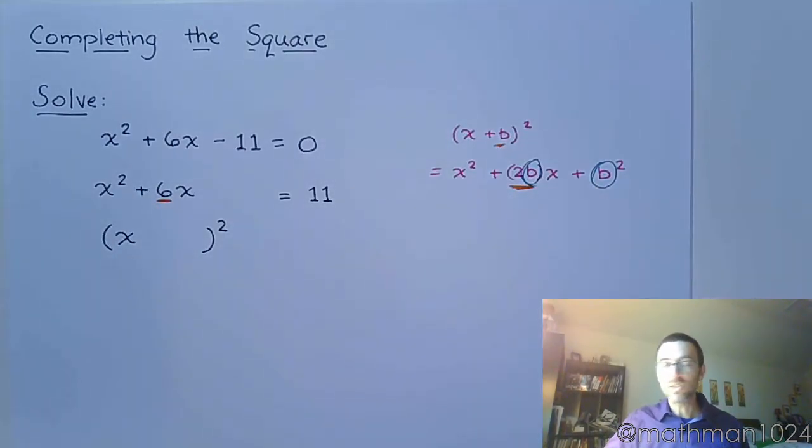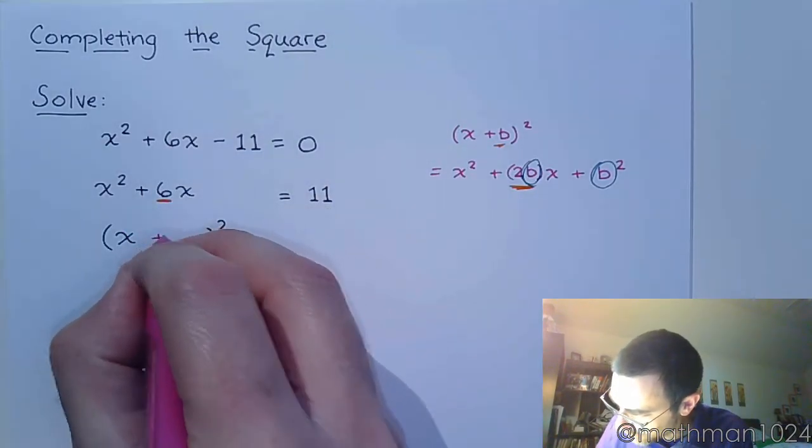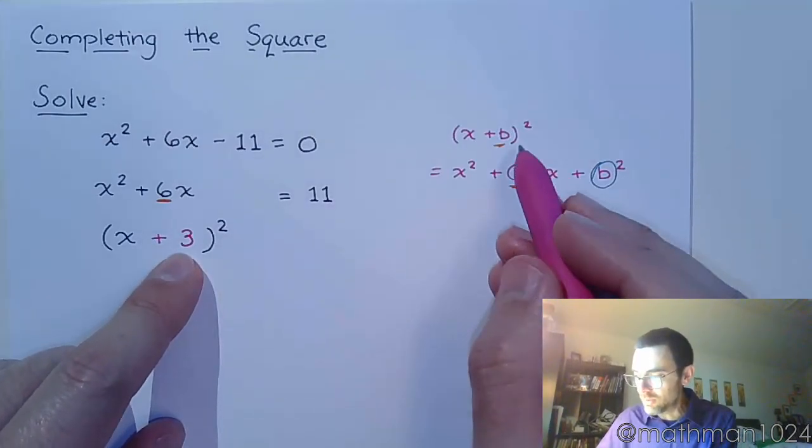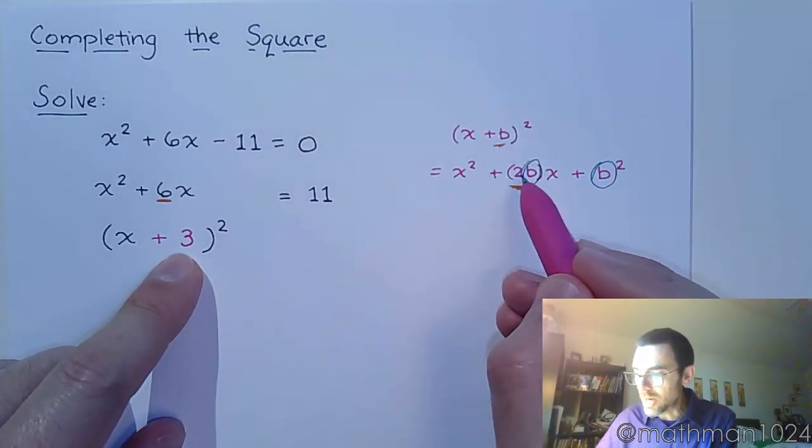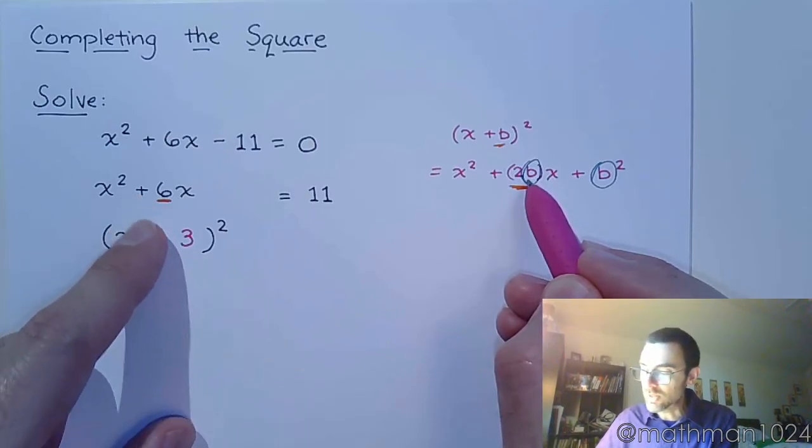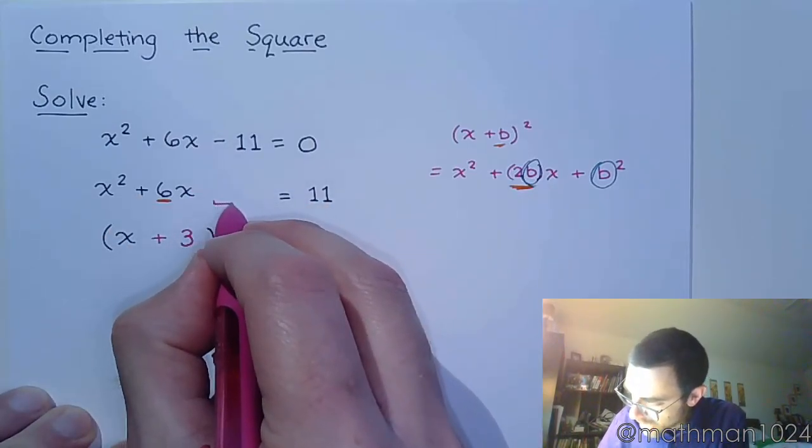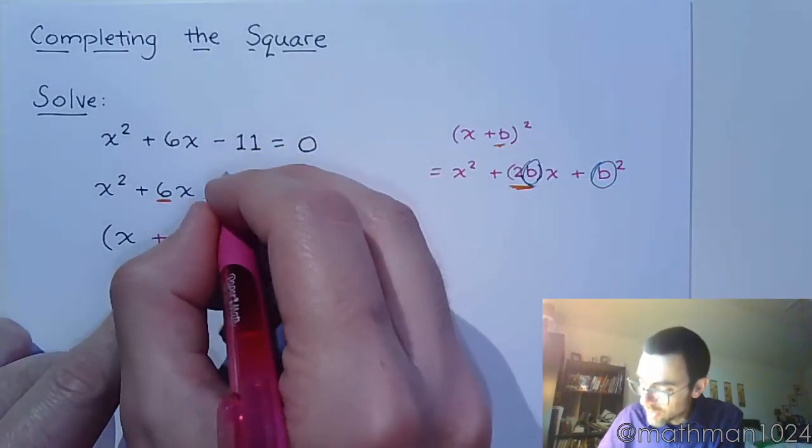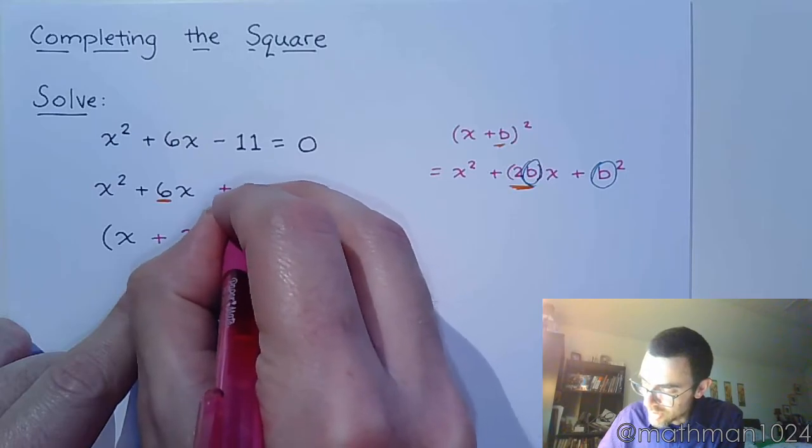So I see 6, if I do half of that that gives me +3, right? So identify my b—that's this guy, because 2 times b, 2 times 3 is 6—which means in the gap is supposed to be b². So again if b is 3, this guy is going to be b² which is 9.